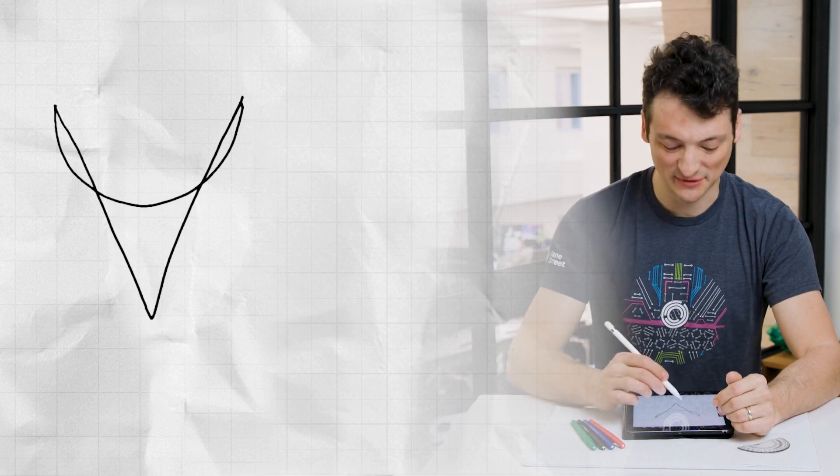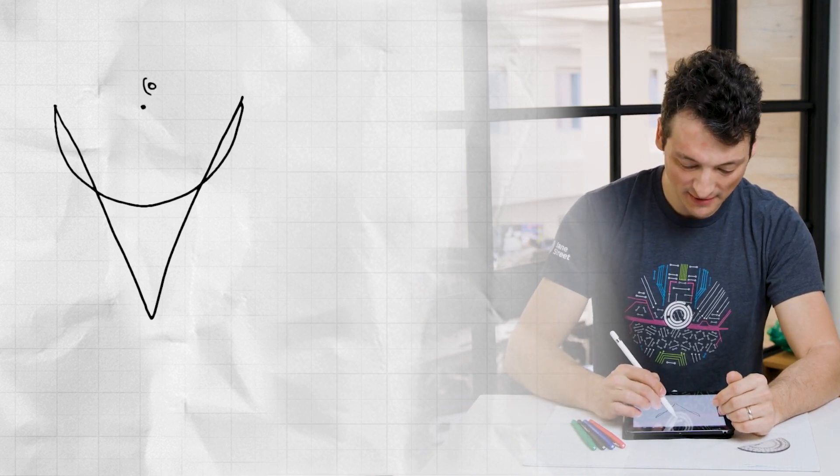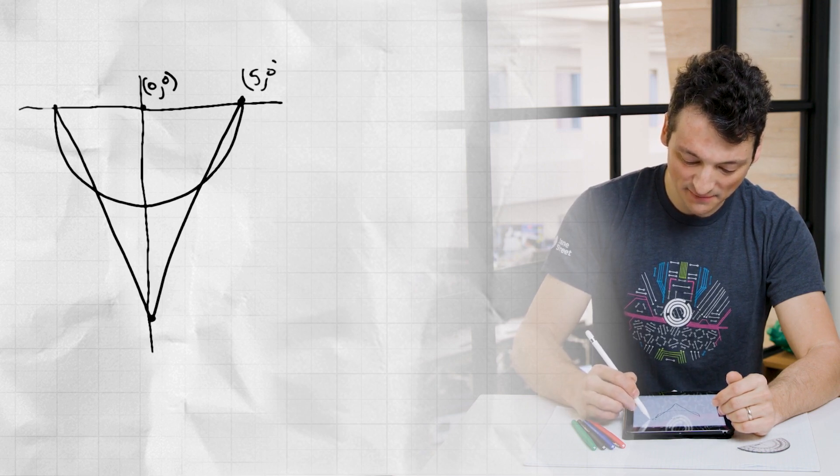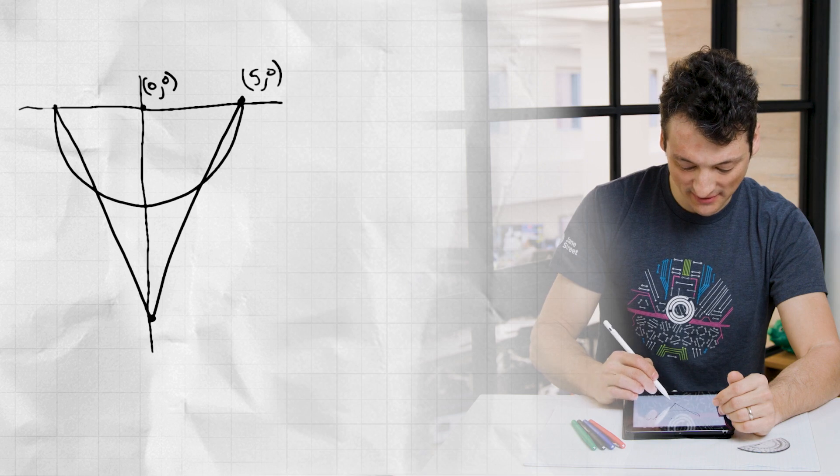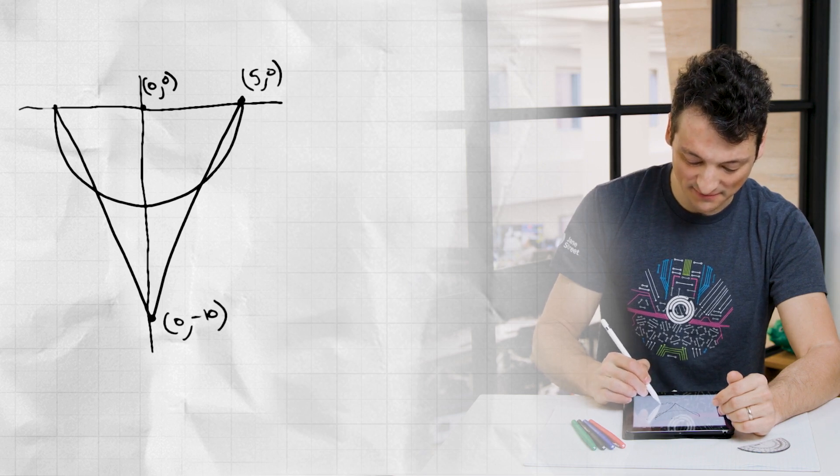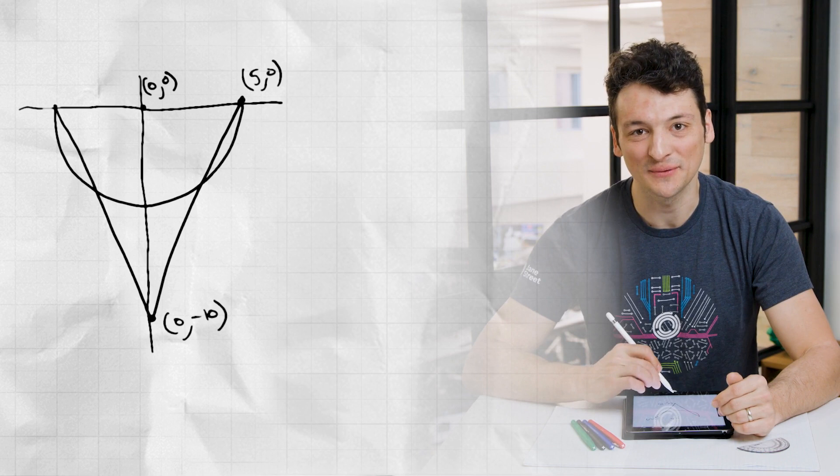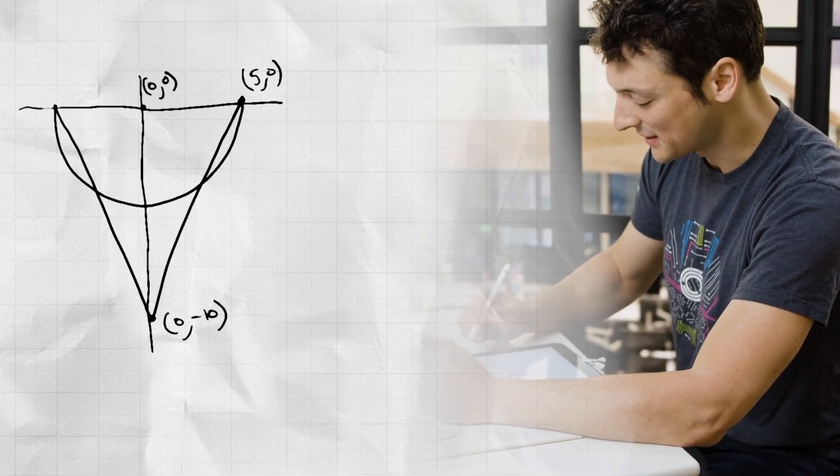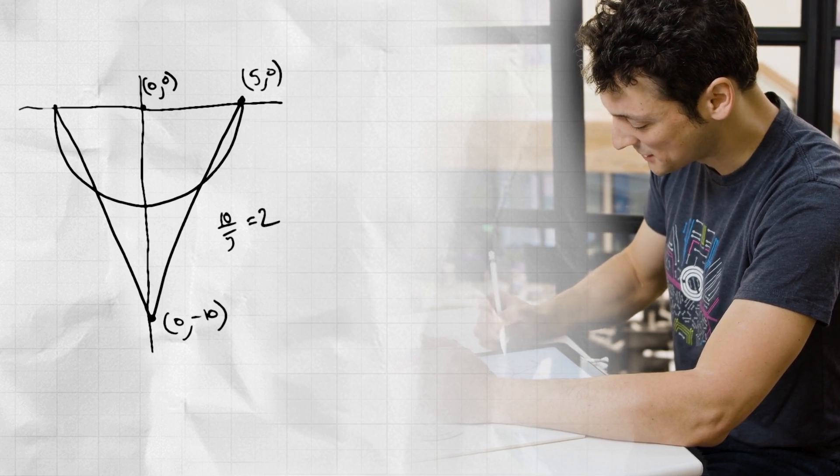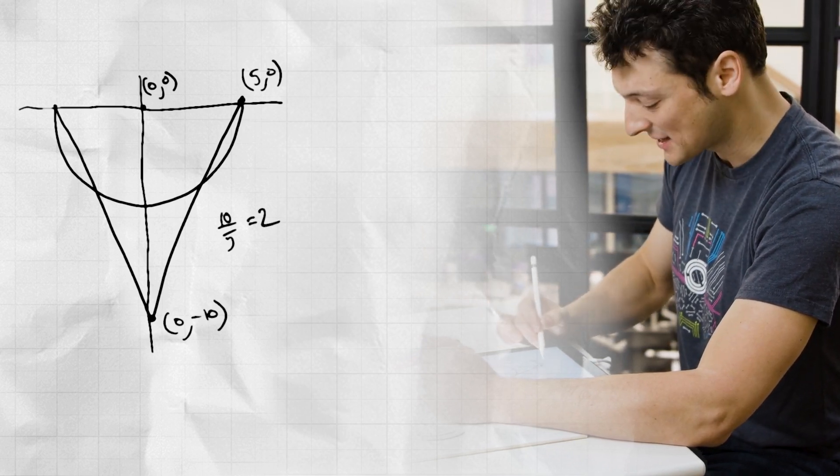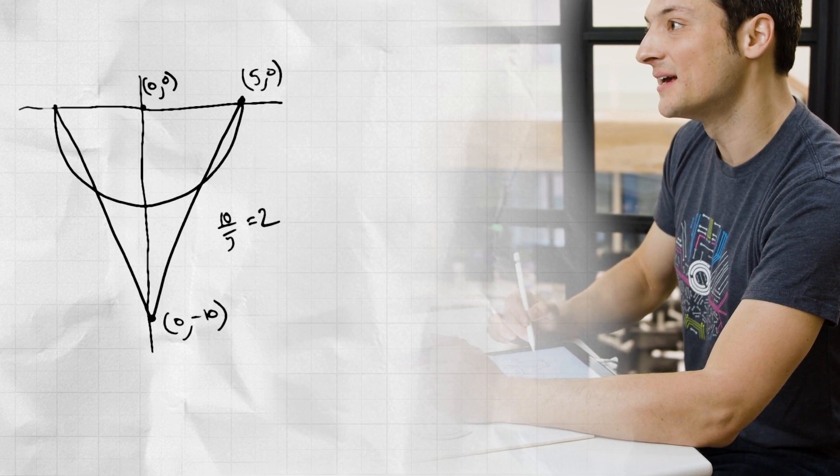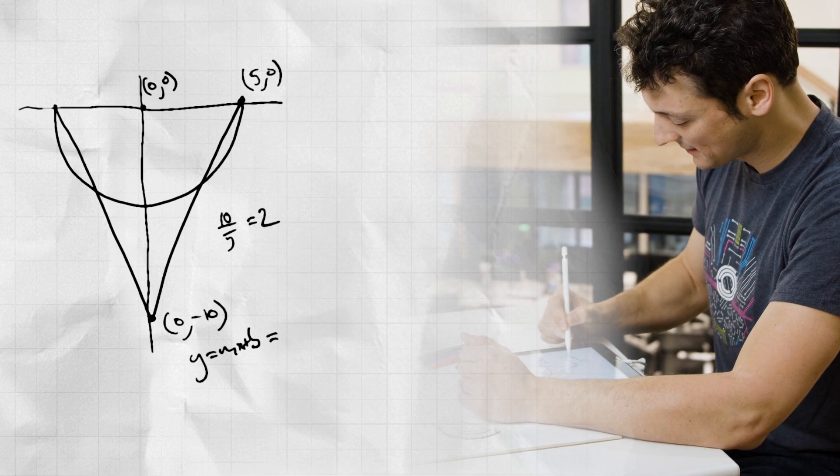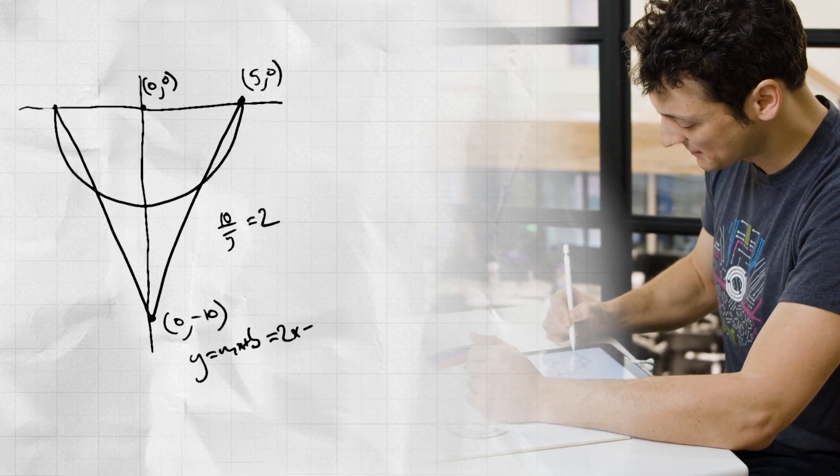If we declare the center of the sphere to be the origin, then this right lip of the sphere is (5, 0), and the tip of the cone is (0, -10). Therefore the right side of the cone is the line between these points. It has slope rise over run, that's 10 over 5, or just 2, and y intercept -10. So the formula is just y equals mx plus b equals 2x minus 10.